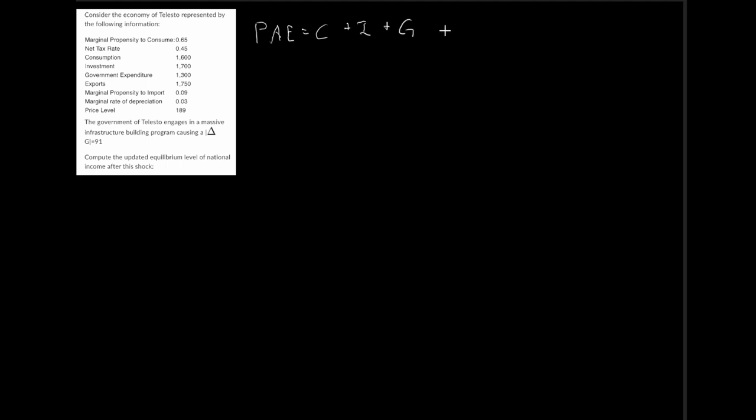The first thing we need to do is figure out our equilibrium level of national income, and we need to solve for this irrespective of anything else. We start with our planned aggregate expenditure, which equals consumption plus investment plus government expenditure plus net exports. From here we need to expand consumption and net exports into their corresponding functions.